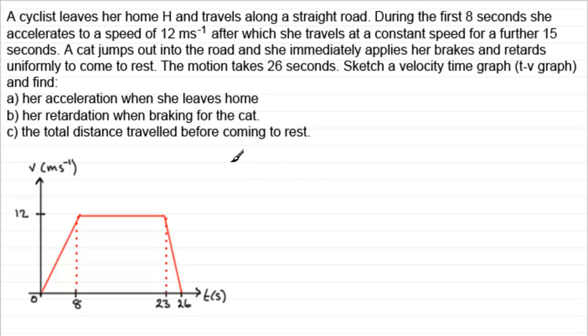So starting then with A. Starting with A, what have we got? We've got to find her acceleration when she leaves home. Well, the acceleration a is given by the gradient of this line. Gradient will be a positive gradient because it's the increase in velocity. So it's increased by 12 over the time taken. So we've got an increase of 12 over the time taken, which is 8. 12 divided by 8 is 1.5. So her acceleration when she leaves home is 1.5 meters per second per second.